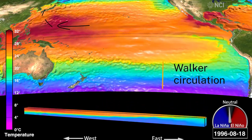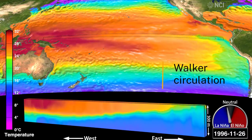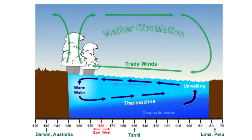The Walker circulation is really important because it also feeds back into keeping and maintaining this neutral phase as the winds flow from east to west. These trade winds pile up water on the western side of the tropical Pacific Ocean. As a consequence, water rises from the deeper layers of the ocean on the east side of the tropical Pacific — a process known as upwelling.